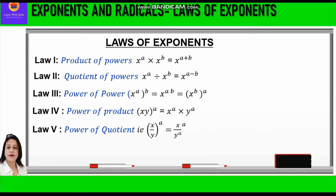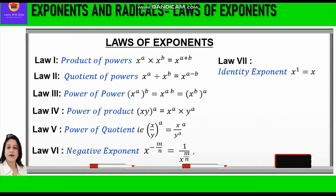The fifth law is power of quotient. It is x upon y raised to power a, equal to x raised to power a upon y raised to power a. The sixth law is negative exponent, which says x raised to power minus m by n is equal to 1 over x raised to power m by n. So if we have to convert a negative exponent into positive, we just reciprocate the base. The seventh law is identity exponent: x raised to power 1 is equal to x, meaning any number raised to power 1 is the number itself. The eighth law is zero exponent: x raised to power 0 is equal to 1 — any number raised to power 0 is 1.